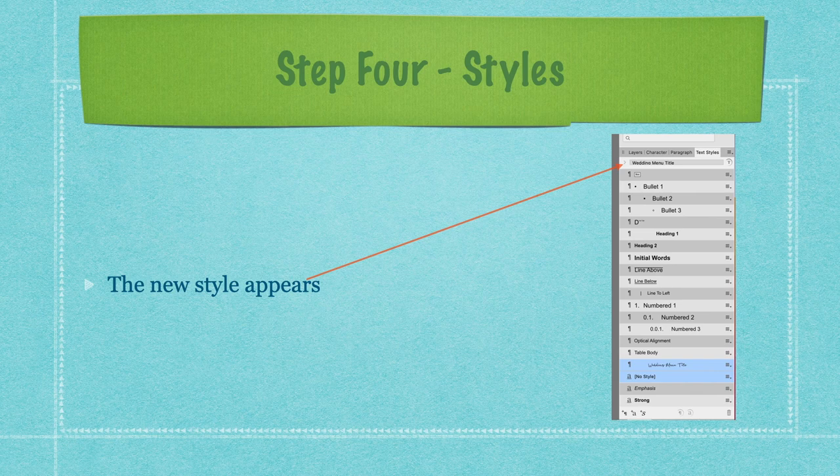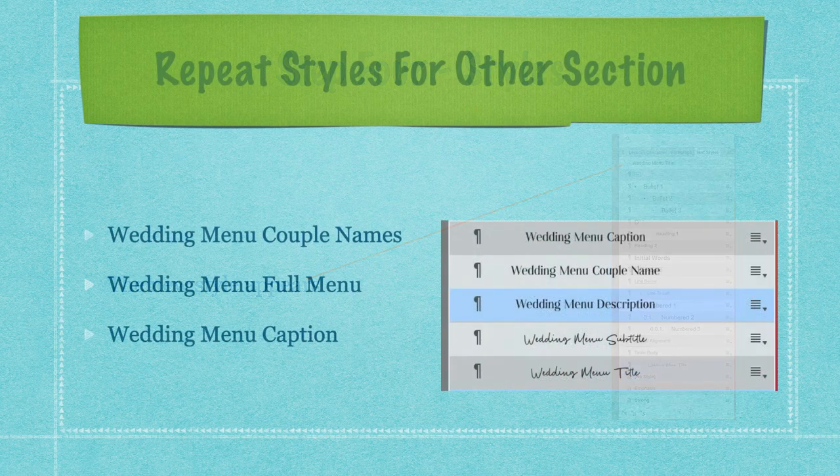If you select any text in the document and click that style, it will apply the same formatting as the wedding menu title. Repeat this process to create styles for: wedding menu couple names, wedding menu full menu, and wedding menu caption — that's the 'Bon Appétit' at the bottom.